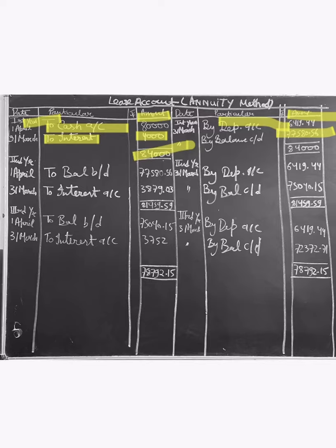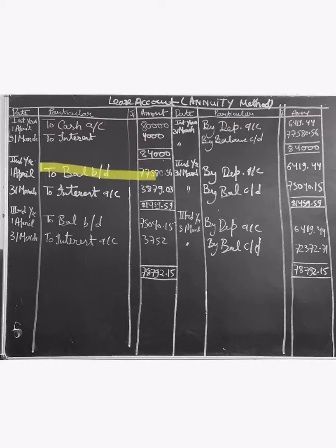This balance is shown as balance brought down: 77,580.56. The second year interest is calculated on this amount: 77,580.56 times 5 divided by 100 equals 3,879.03.